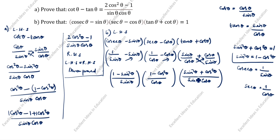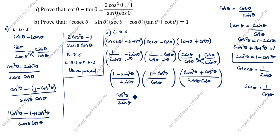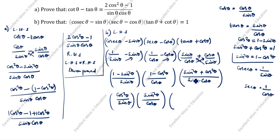Next step: 1 minus sin²θ. You see, sin²θ plus cos²θ equals 1, so 1 minus sin²θ equals cos²θ. Keep it here: 1 minus sin²θ becomes cos²θ. So we will write this as cos²θ divided by sin θ. Open the next bracket: 1 minus cos²θ equals sin²θ — this is the formula. We will take sin²θ divided by cos θ.